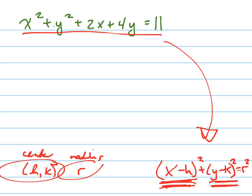So the first thing I'll do is move the X's together and the Y's together. So X squared plus 2X. I'm going to leave a little space here in my equation. Plus Y squared plus 4Y. I'm going to leave another little space there. Erase this for some room. Equals 11.